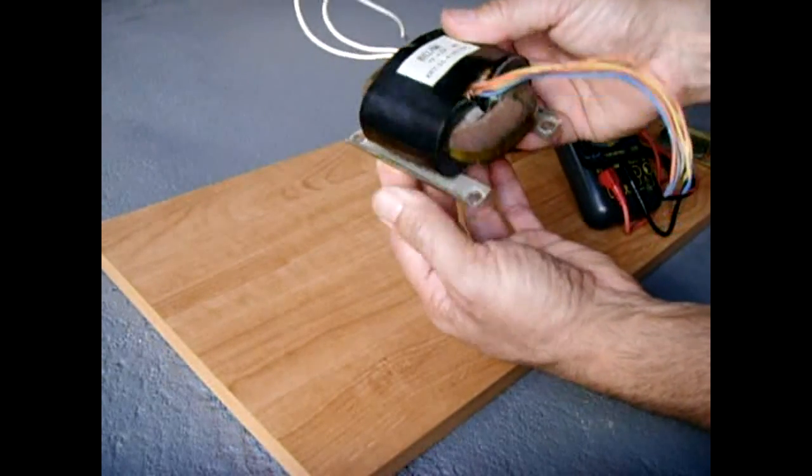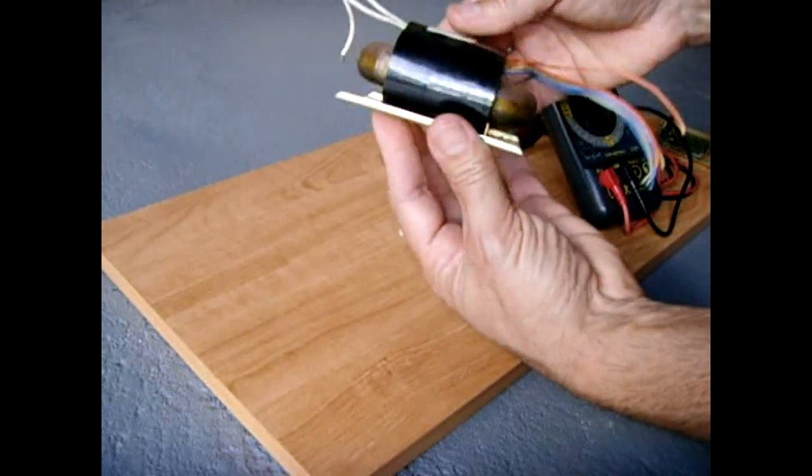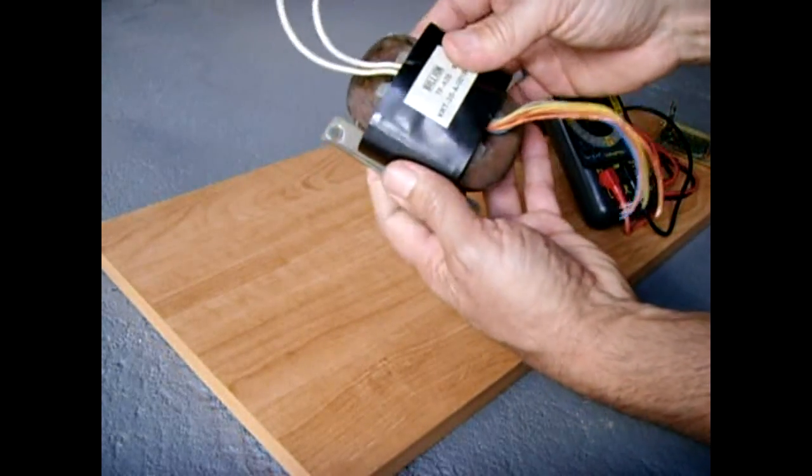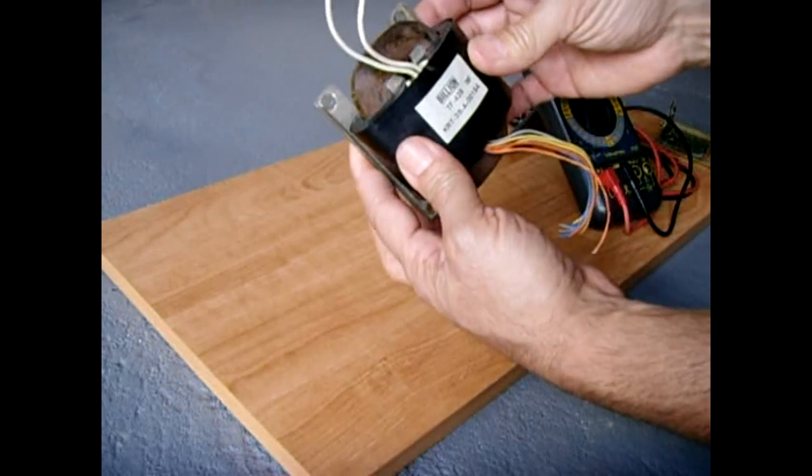Now before that day, I've never seen one like this before. Usually I'm looking at the E-I cores, which is the common transformer. But this type is what they call an R-Core.